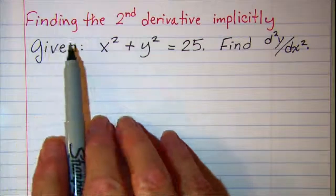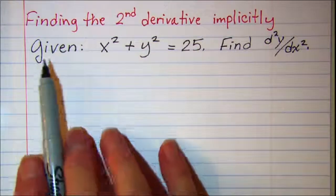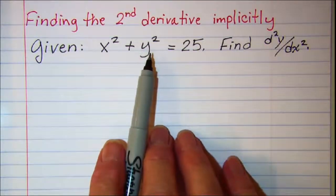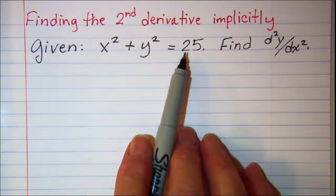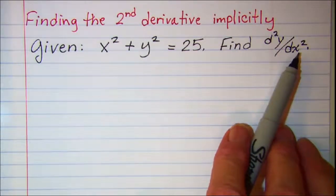In this video we'll be finding the second derivative implicitly. We're given that x² + y² = 25 and we're asked to find the second derivative of y with respect to x.